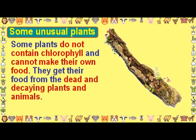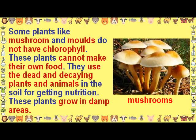Some unusual plants: some plants do not contain chlorophyll and cannot make their own food. They get their food from dead and decaying plants and animals. Plants like mushrooms and molds do not have chlorophyll and cannot make their own food.